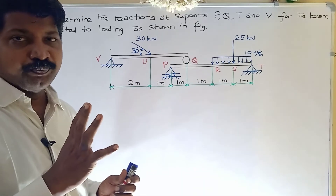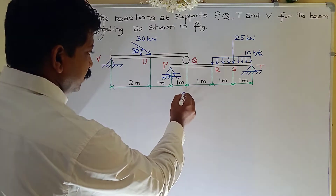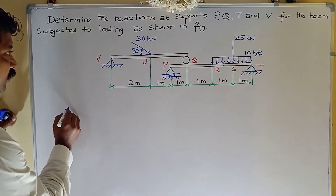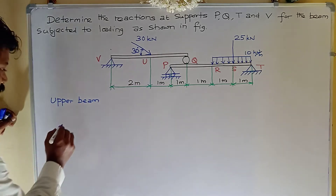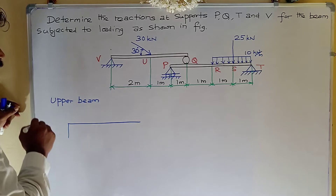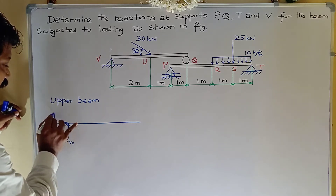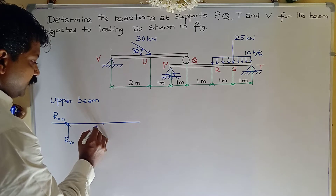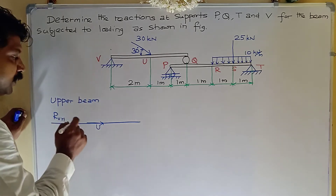First, we will consider the upper beam and then the lower beam. The procedure is: draw the free body diagram and then apply the equilibrium conditions. For the upper beam, at point V there is a hinge support, so one vertical reaction RVV and one horizontal reaction RVH are available. Two meters after, at point U, the resultant force acts at an inclination of 30 degrees.